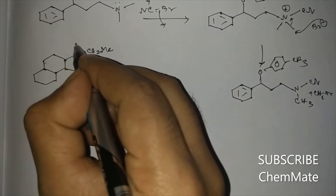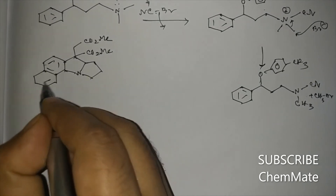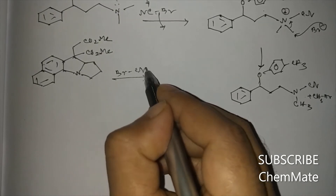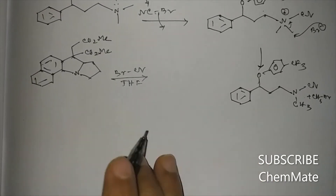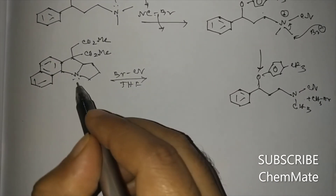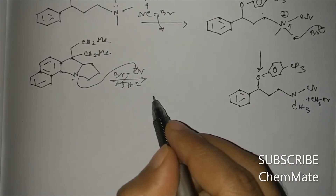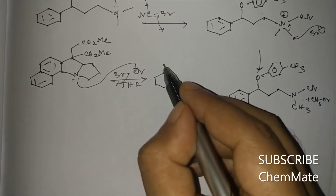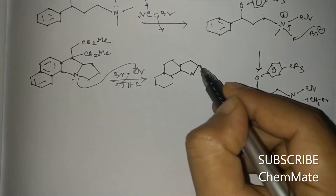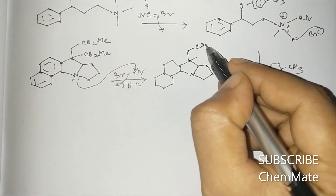Now another example: a cyclic tertiary amine bearing two ester groups (CO2Me) is treated with BrCN in THF. First, the nucleophilic attack of nitrogen at the CN center takes place to form the quaternary intermediate, and after that we need to decide at which carbon the Br minus attack will occur.